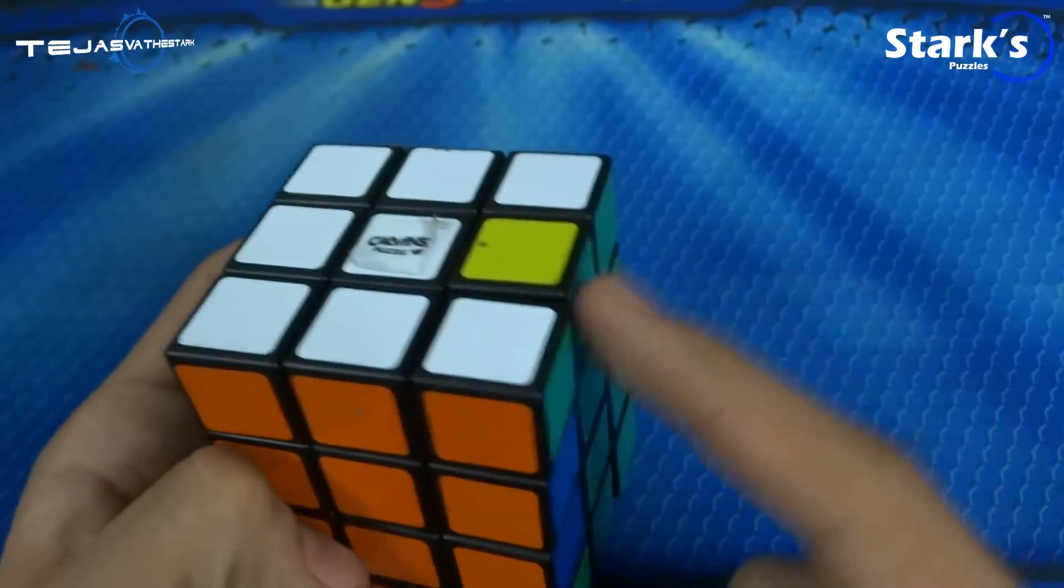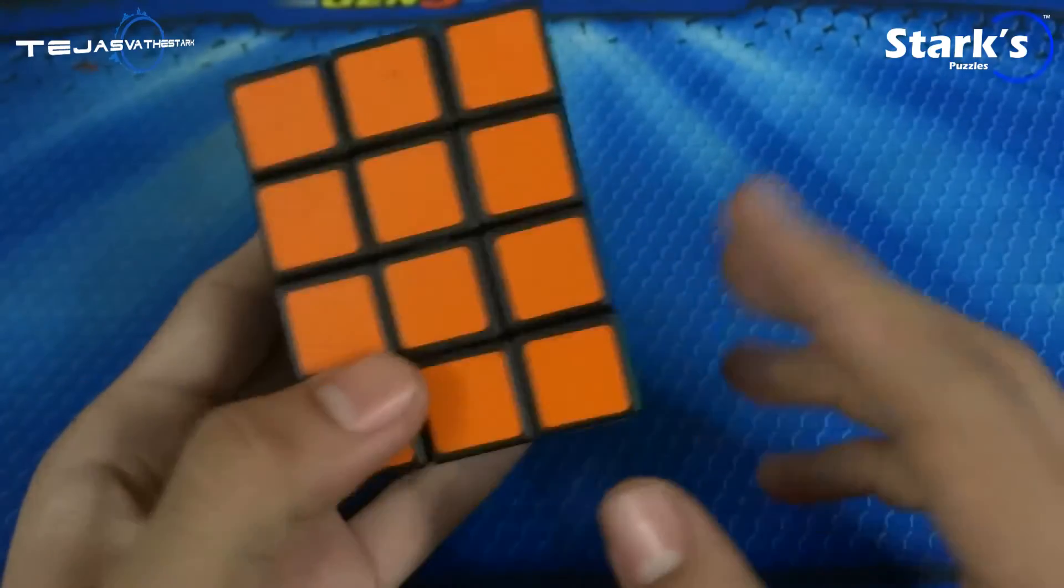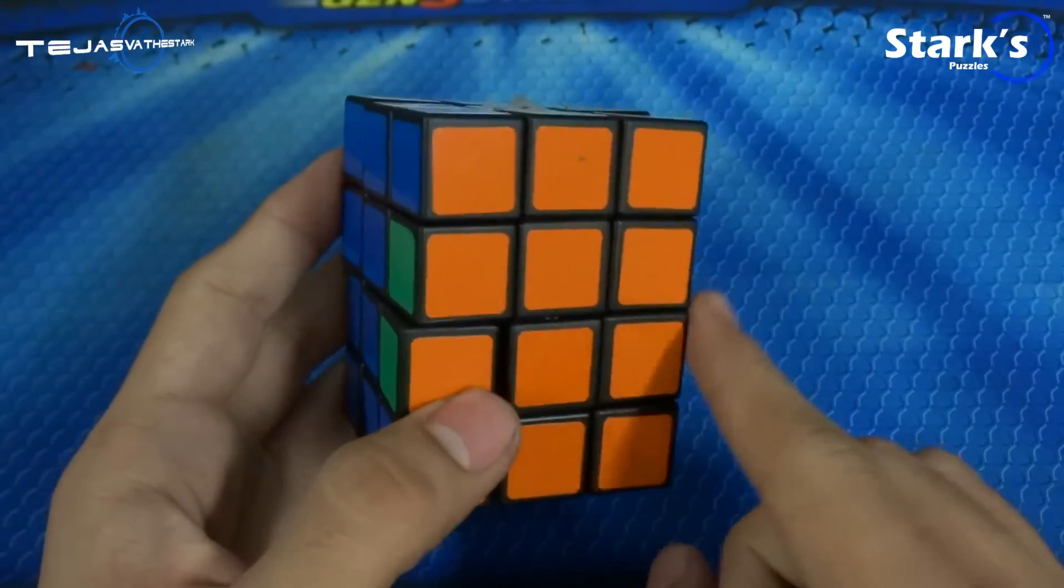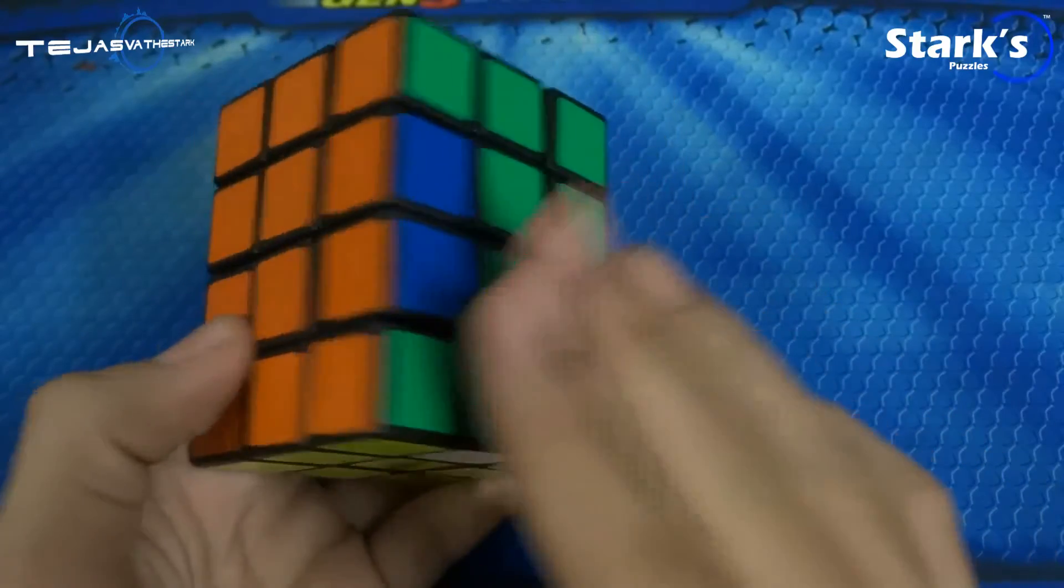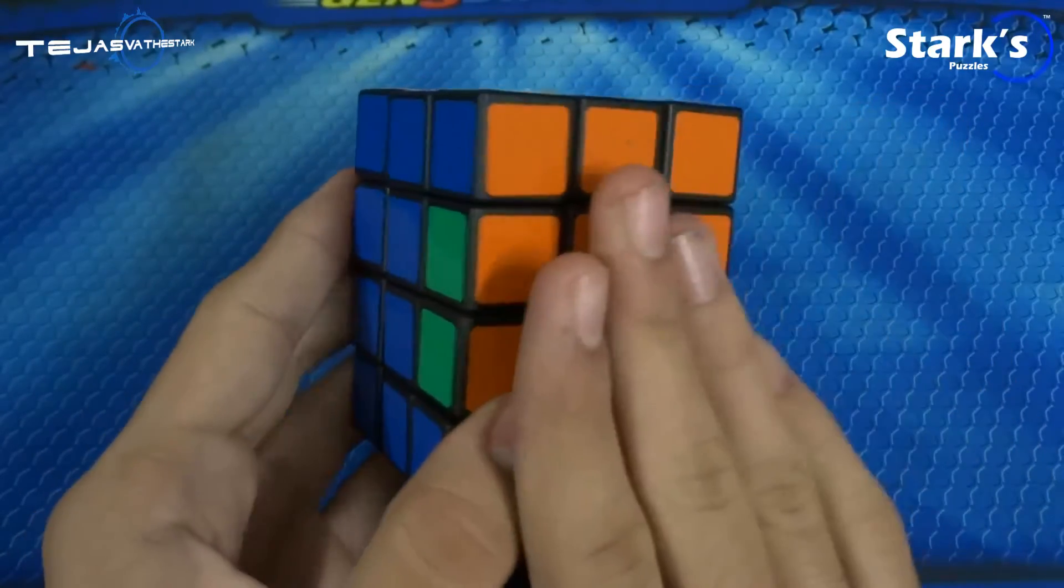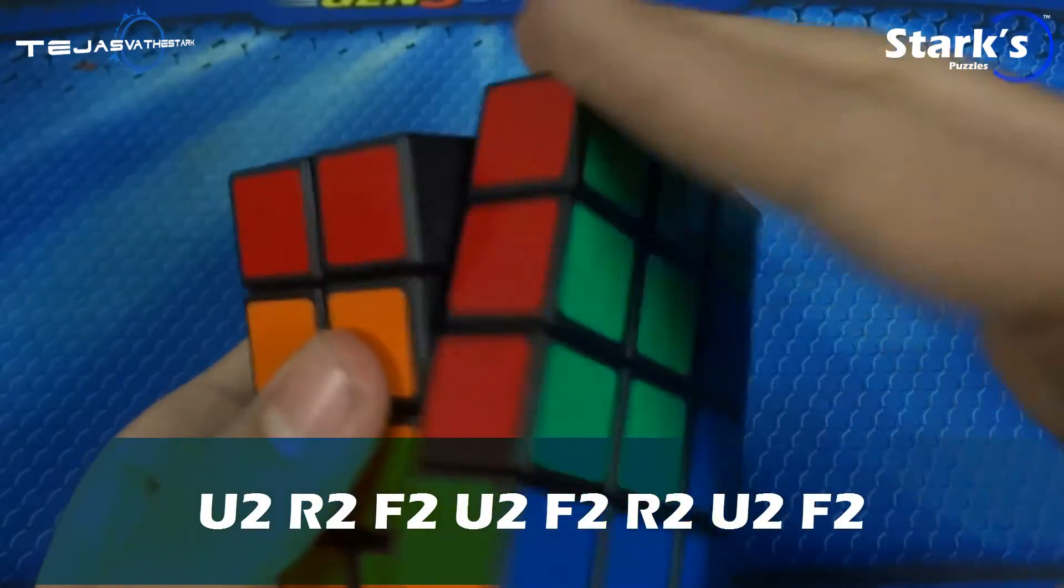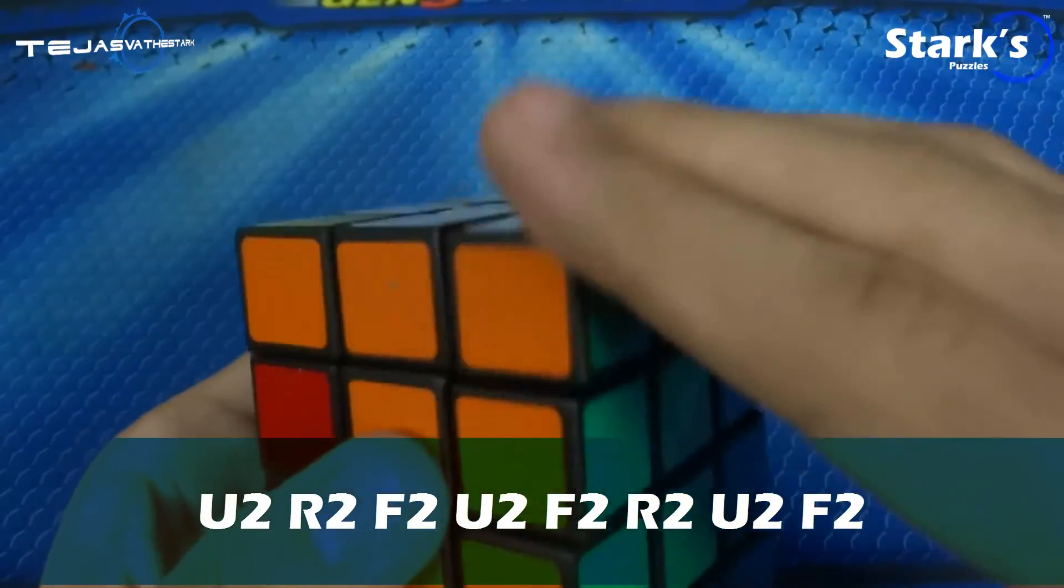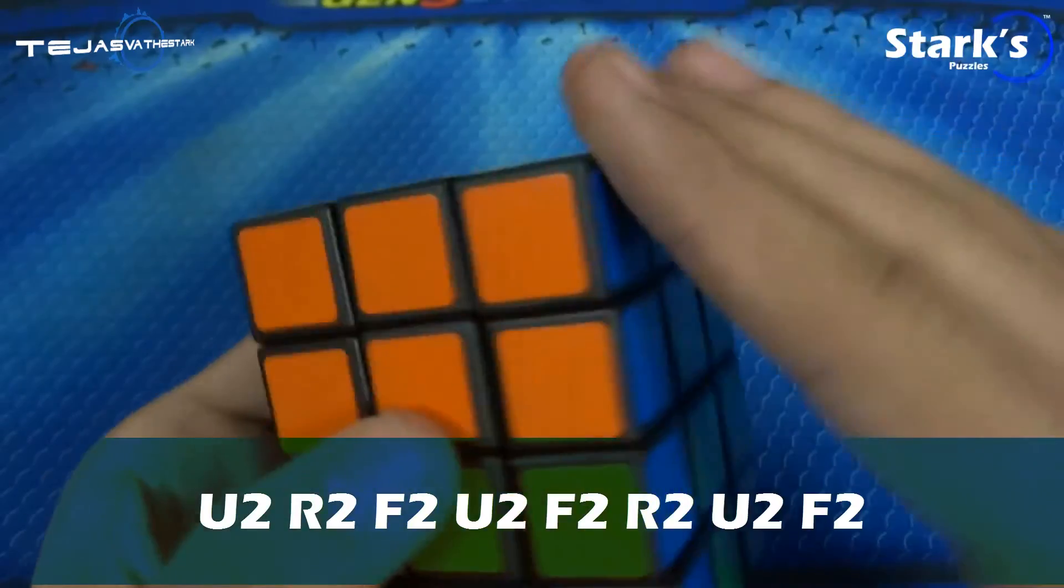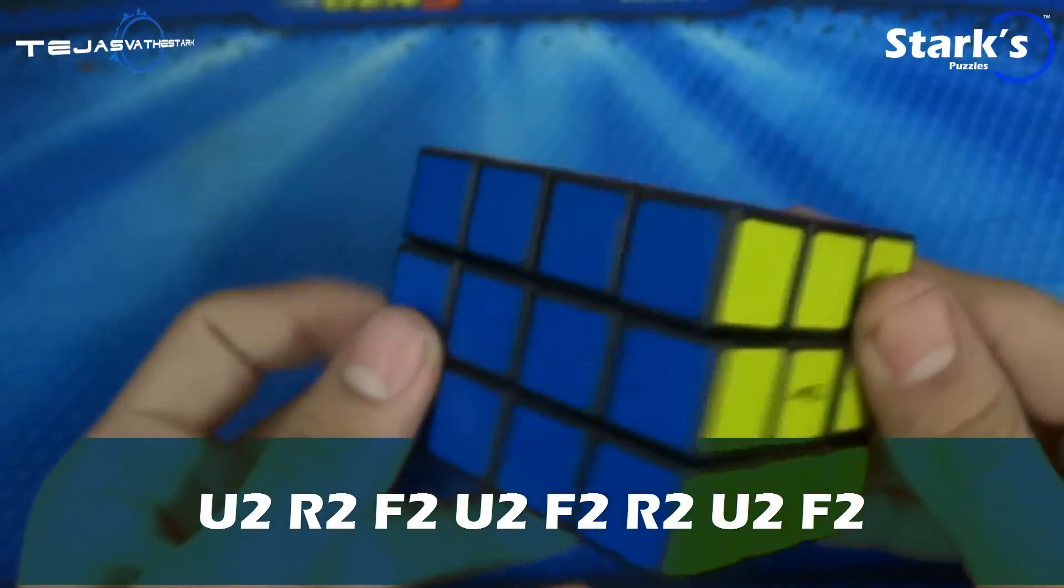If this case comes up, this is actually considered the parity. In this case you just want to put the parity in the front and then you want to go u2 r2 f2 u2 f2 r2 u2 f2 and then it will be solved.